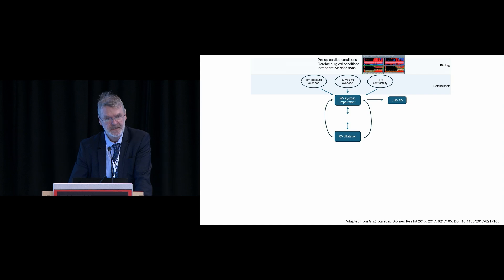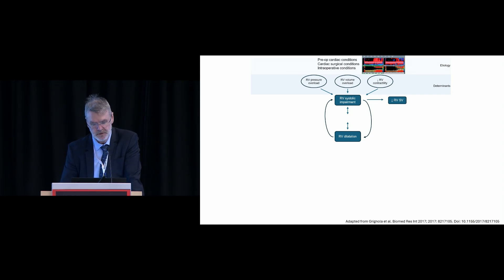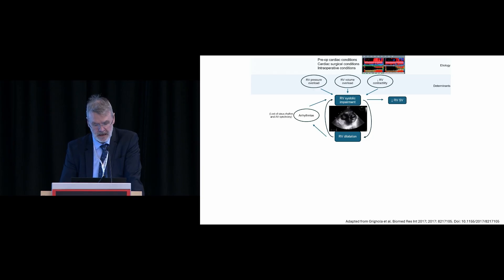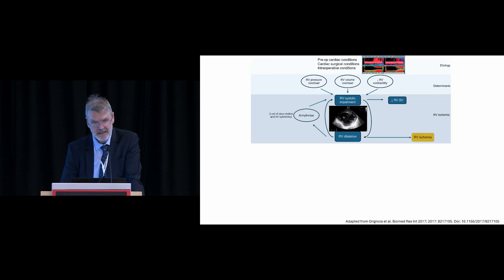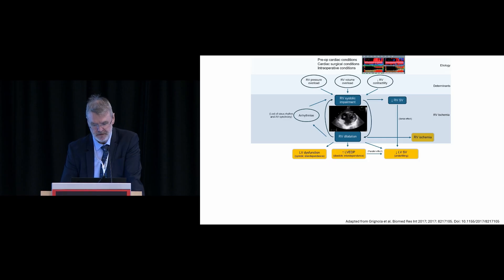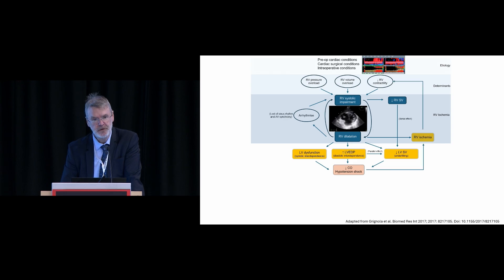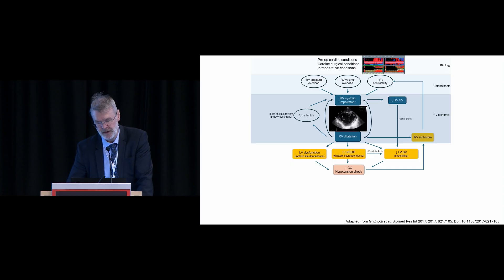If you have RV systolic impairment, at one point your stroke volume will start to be reduced and you will see RV dilatation. RV dilatation will lead to right atrial dilatation, arrhythmia, loss of AV synchrony, and then RV ischemia. As RV dilatation progresses, this will affect the left ventricle, further reducing RV stroke volume, leading to hypotension, shock, and further deterioration of right ventricular contractility.